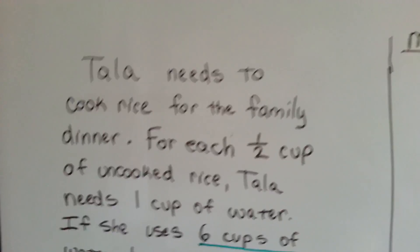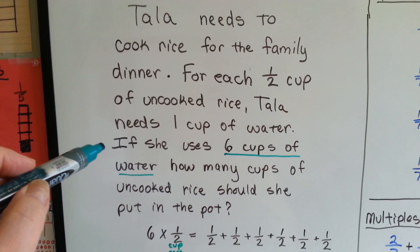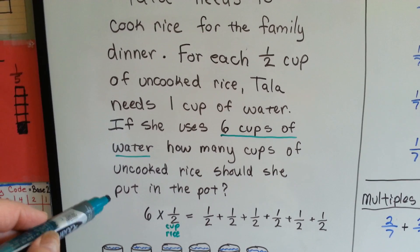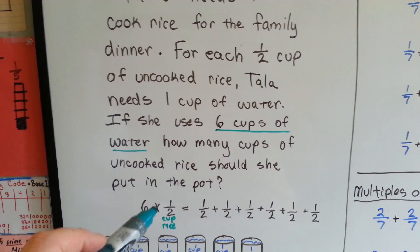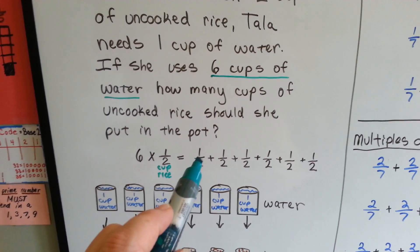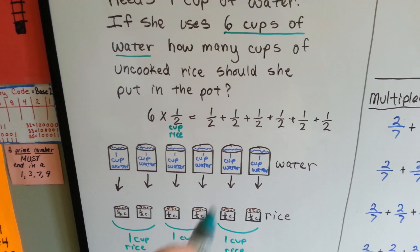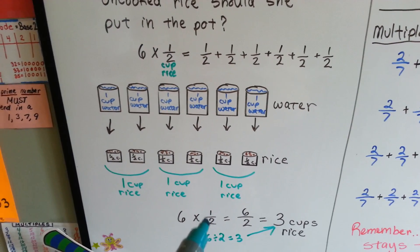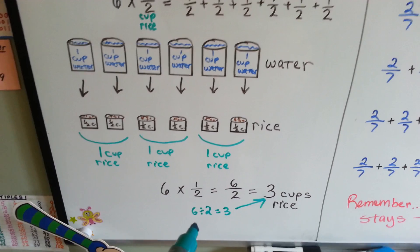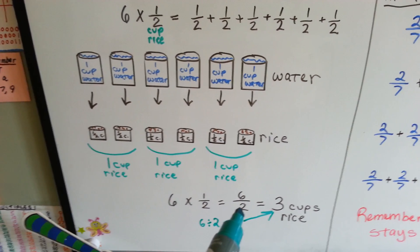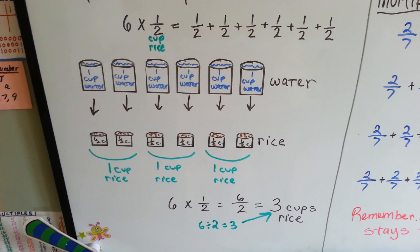Tala needs to cook rice for the family dinner. For each half cup of uncooked rice, Tala needs 1 cup of water. If she uses 6 cups of water, how many cups of uncooked rice should she put in the pot? We've got 6 cups of water and 1 half cup of rice for each cup. So that's 6 times 1 half. In repeated addition, we'd have 1 half added up 6 times. Here's 6 cups of water and 1 half cup of rice for each one. 6 times 1 half would be 6 halves. We have 6 of them here. 6 halves simplifies to 3 cups of rice. We ask ourselves, how many times does 2 fit into 6? It fits in 3 times because 6 divided by 2 equals 3.